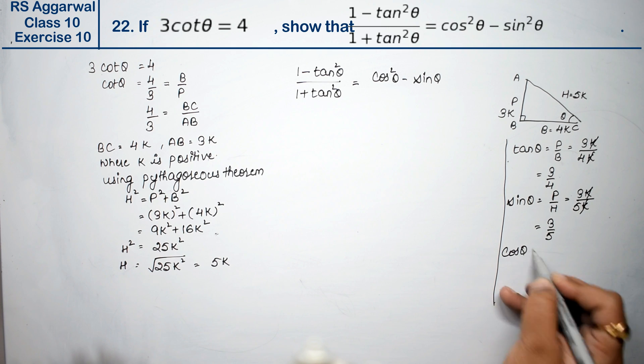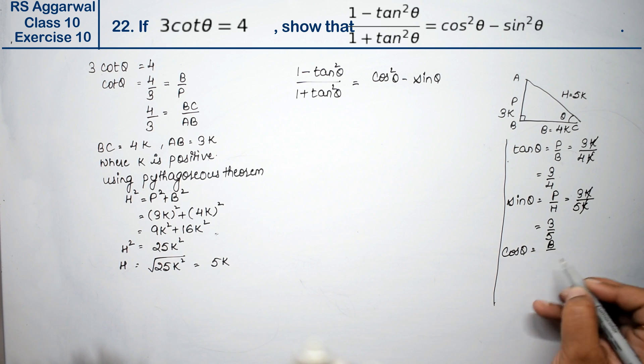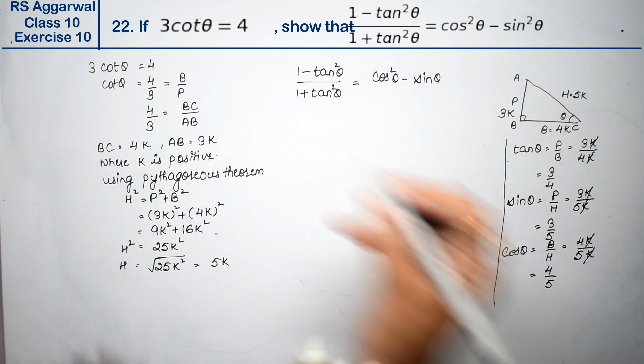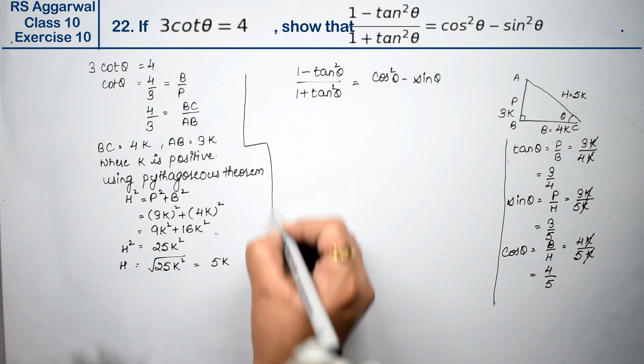cos θ is base upon hypotenuse, which is 4k upon 5k. k cancels, so the answer is 4 upon 5. Now it's time to prove left-hand side equals right-hand side.